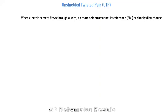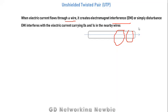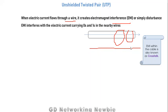Now let's move to unshielded twisted pair. Electric current flows through wires and carries our data, but when electric current flows through a wire it creates electromagnetic interference, or EMI. This EMI interferes with the electric current carrying zeros and ones in a nearby wire — for example, a second wire adjacent to the first. This EMI within the cable is also known as crosstalk, so crosstalk and EMI are the same thing.